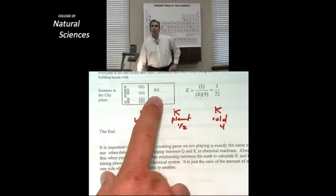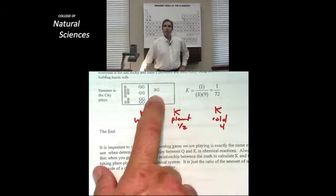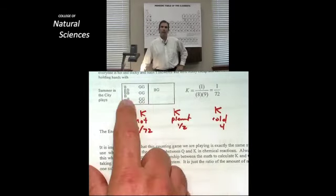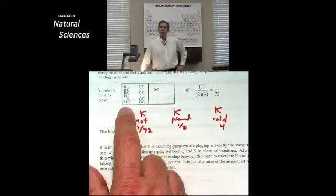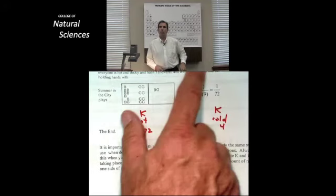When it's all done, there's only one boy-girl in the back room. In the front room, I have eight boys. I have nine, excuse me, eight girls and I have nine boys. And as a result, I have my K now equal to 1 over 72.